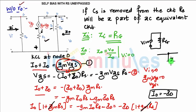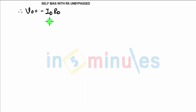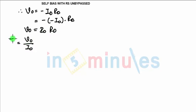At the KCL node, currents id, io, and gm·vgs satisfy io plus id equals gm·vgs. This equation is satisfied only when gm·vgs equals 0, giving io equals minus id. Since gm·vgs equals 0, the current through that branch is 0, and we are left with only the output resistance Rd. Therefore, vo equals minus id times Rd, which equals minus of minus io times Rd, so vo equals io times Rd.